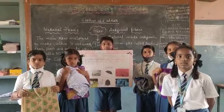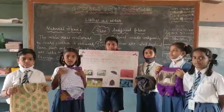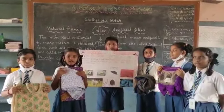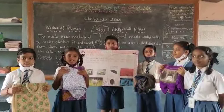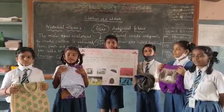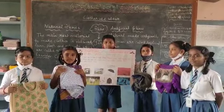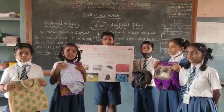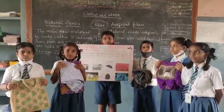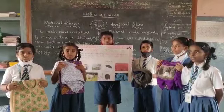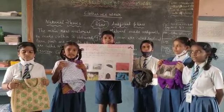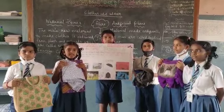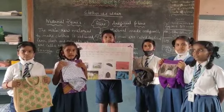and jute. Cotton is a natural fiber. It can prepare so many dresses and saris. It comes from the cotton plant. It is also known as a natural fiber.